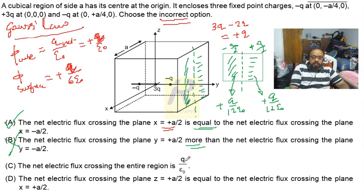Option C states that the net electric flux crossing the entire cube is q/ε₀. This is what we already established — the total flux through the entire cube is q/ε₀ — so option C is correct.